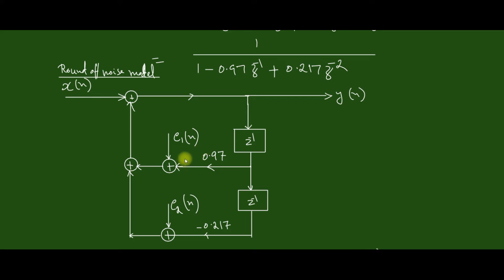Now here in this case, we can see that the error seen by e1 of n and e2 of n are one and the same. So the entire system is seen by both e1 of n and e2 of n.